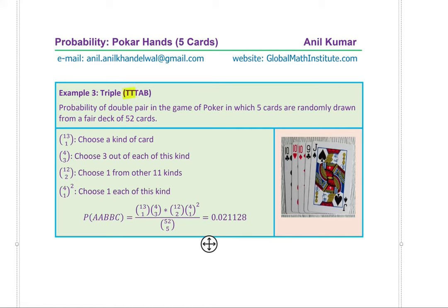Example 3: triple — three of one kind and two other different cards. Choose one kind from 13: 13C1, then 3 of 4 suits: 4C3. The other two cards are from the remaining 12 kinds: 12C2, each of one suit: (4C1)². Dividing by 52C5 gives 0.021128, about 2.1%.